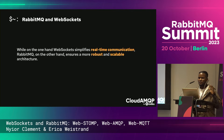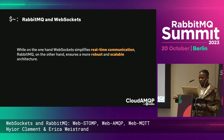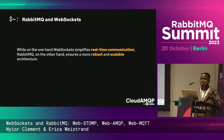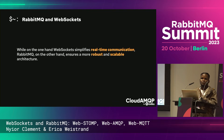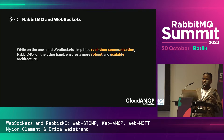While WebSocket simplifies real-time communication, RabbitMQ on the other hand ensures a more robust and scalable architecture. In other words, a real-time web application built on a robust and scalable architecture is what you get when you bring RabbitMQ and WebSocket together. But this begs the question: how do you bring RabbitMQ and WebSocket together?